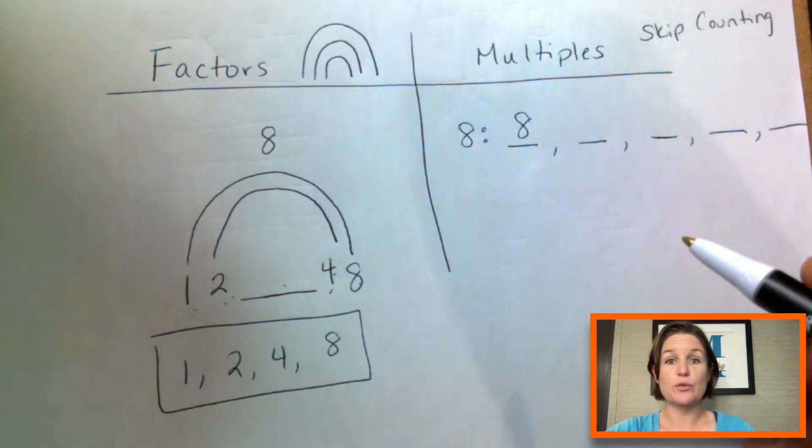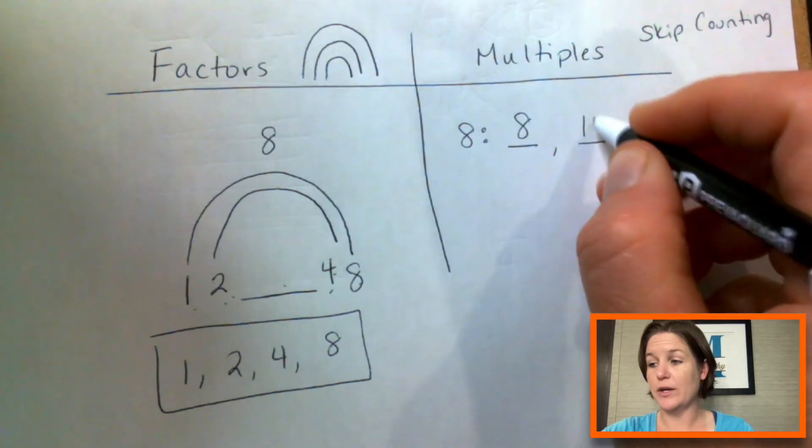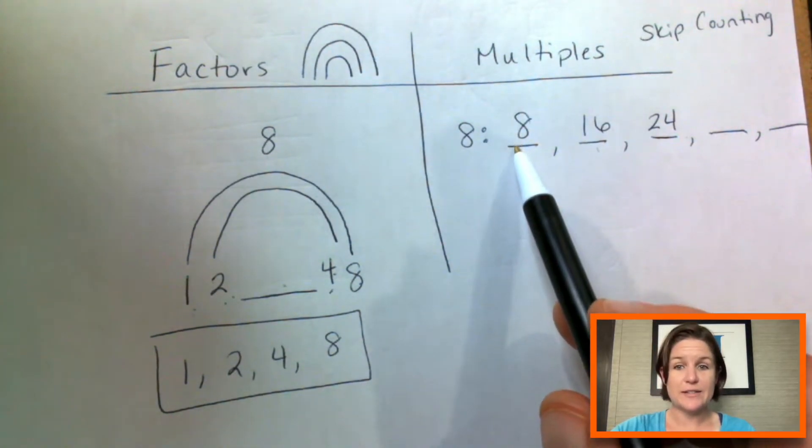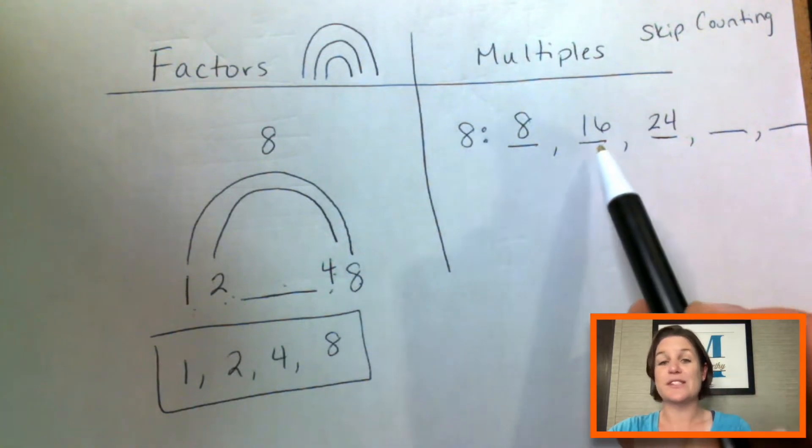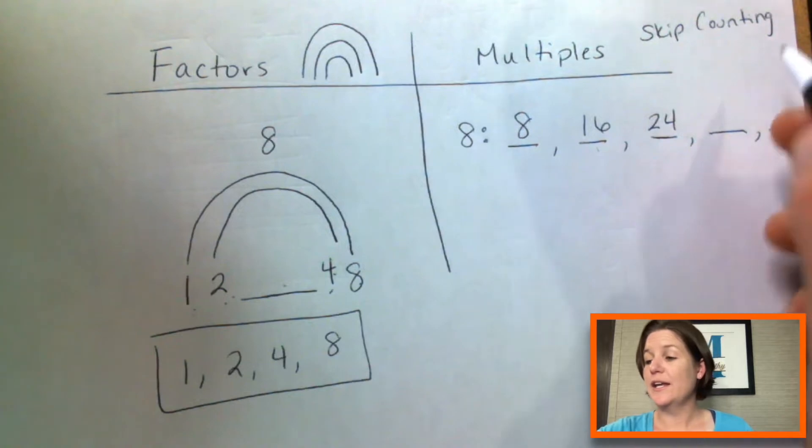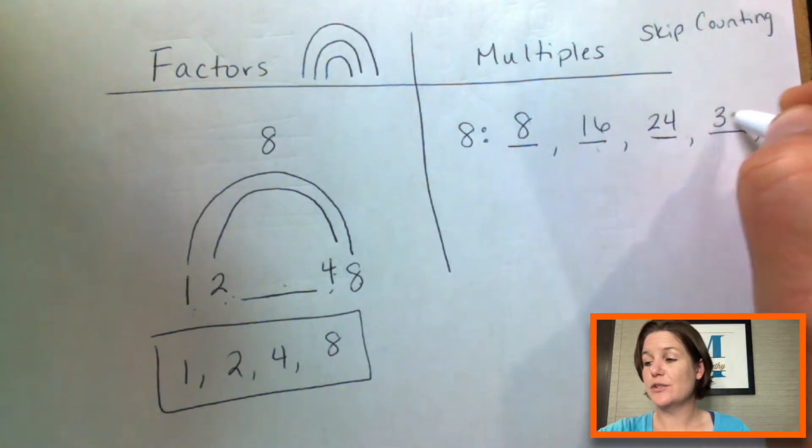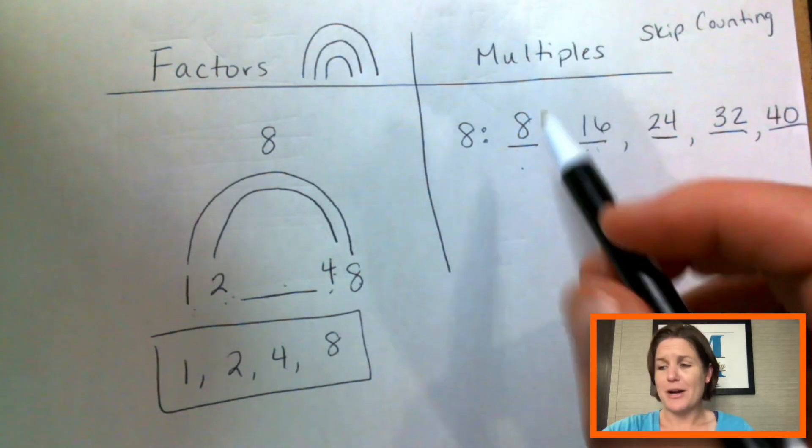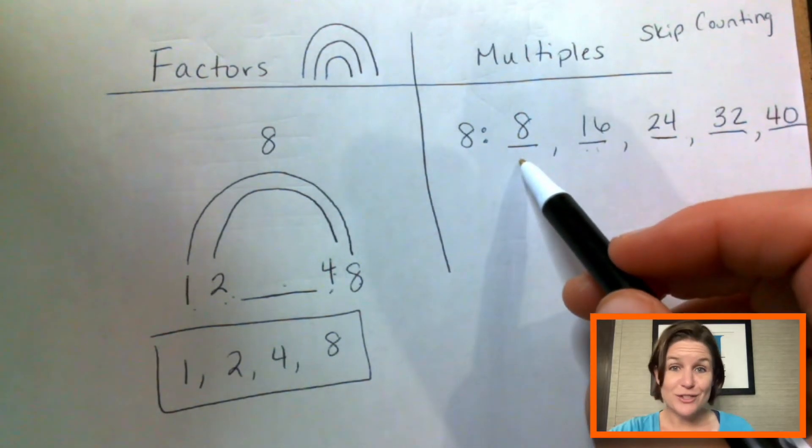Okay. And then eight times two is 16 or plus eight would be 24. So eight times one is eight, eight times two is 16, eight times three is 24, eight times four is 32, and eight times five is 40. And each time we're also adding eight.